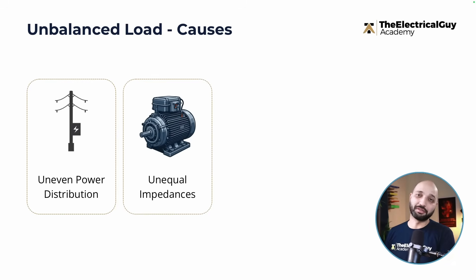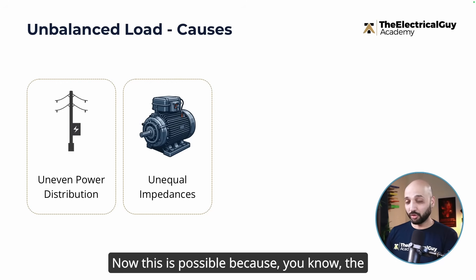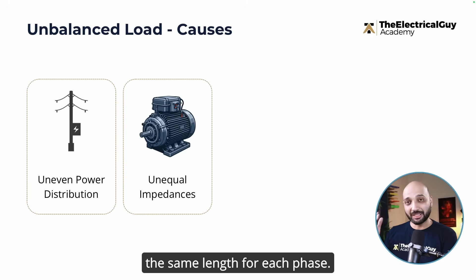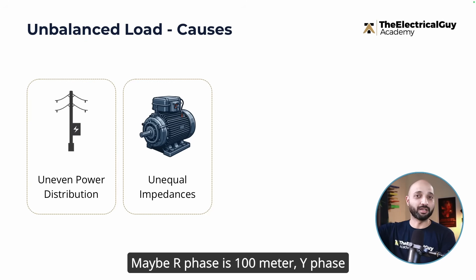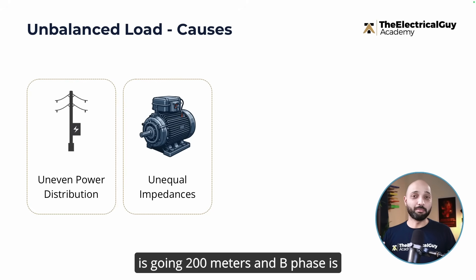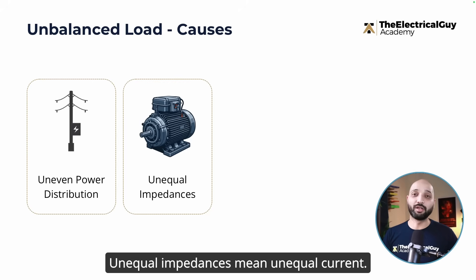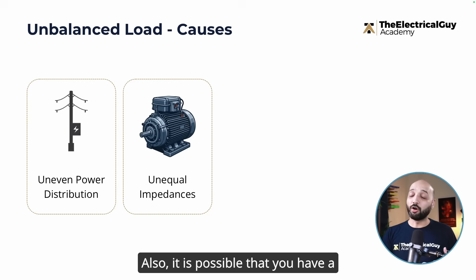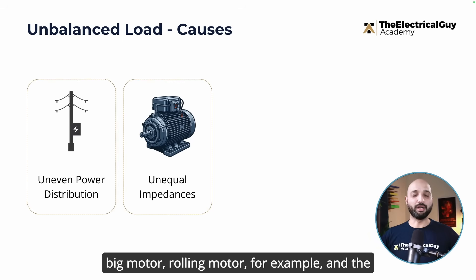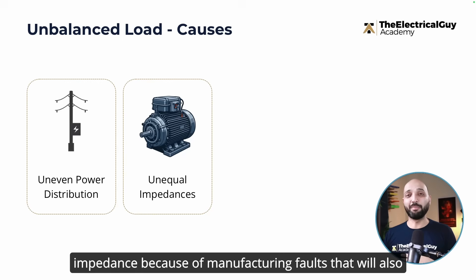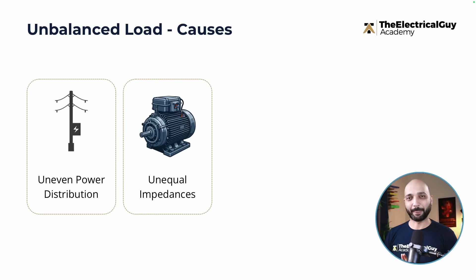The second cause is unequal impedances. Distribution cables are not necessarily the same length for each phase — maybe the R phase runs 100 metres, the Y phase 200 metres, and the B phase only 50 metres, so we have no control over that. It is also possible that a large rolling motor has three windings with different impedances due to manufacturing faults. Unequal impedances mean unequal current and then a lot of problems follow.